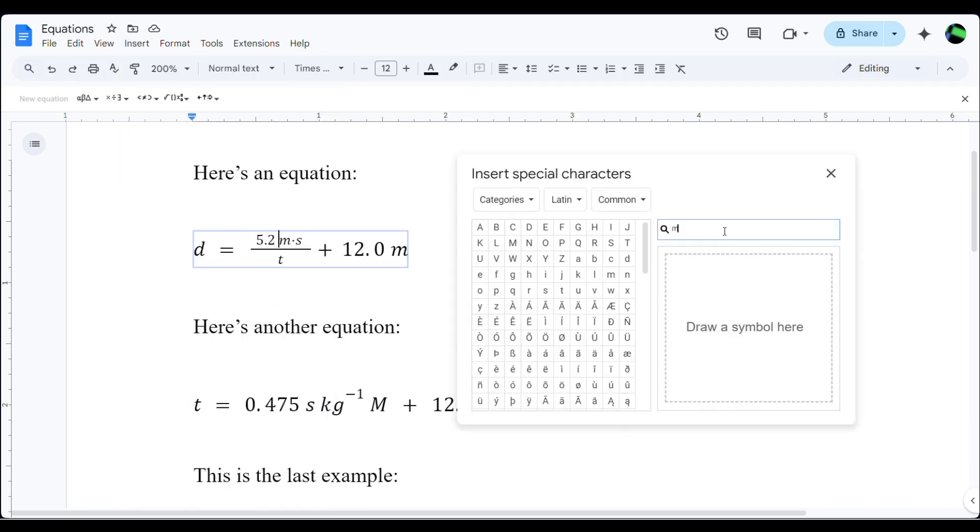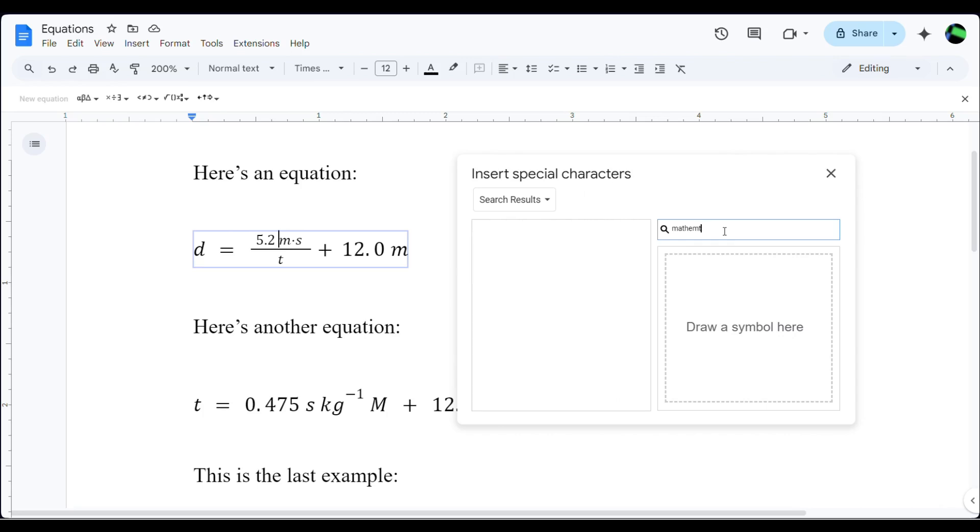Then you search for mathematical sans M because I'm looking for an M in this case. Here are the options that pop up. I want this nice boring M, so I hover my cursor over it and click. That inserts it into the equation.